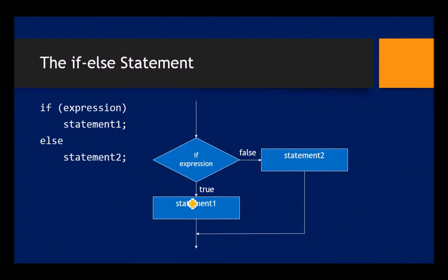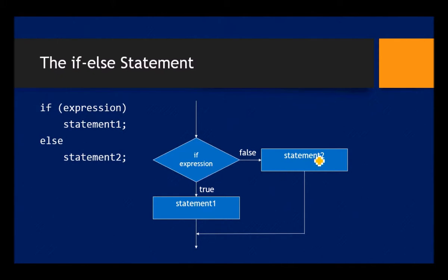We also have an if-else statement. With if-else: if the expression is true, it does statement one — just like before. If the expression is false, instead of skipping, it runs statement two. So if-else is an either-or kind of logic: expression is either true or false, and it runs one statement or the other — never both. Here's the syntax: 'if (expression)' statement one, 'else' statement two.